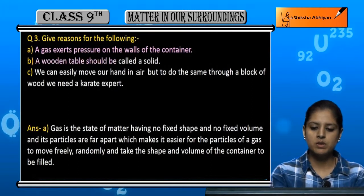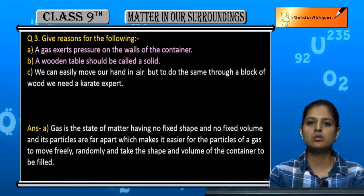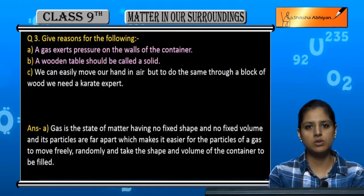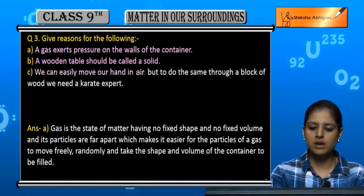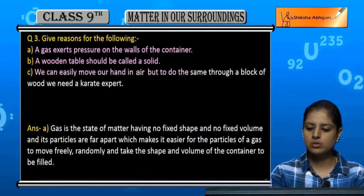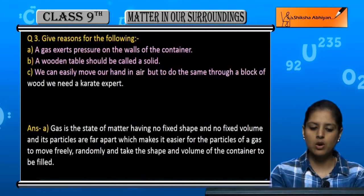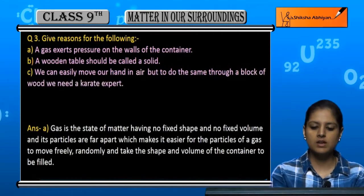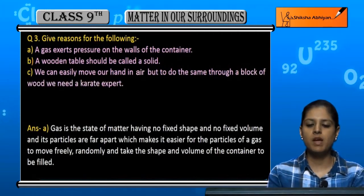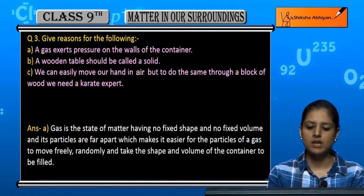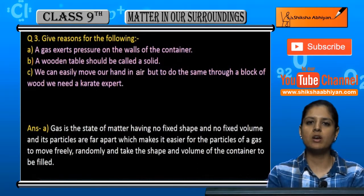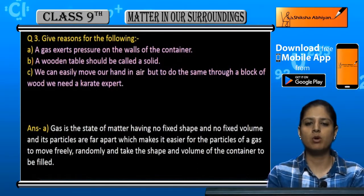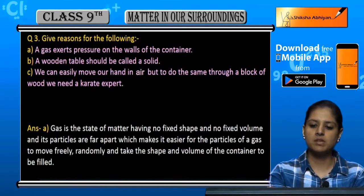Second observation — a wooden table should be called a solid. Third — we can easily move our hand in air, but to do the same through a block of wood we need a karate expert. Moving a hand in air is very easy, but moving it through a wooden block is very difficult.